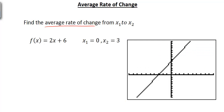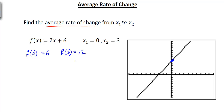What we're trying to calculate is the average rate of change from x1. If we evaluate f of 0, we plug 0 in: 2 times 0 plus 6 is 6. Then we look at f of 3—plugging 3 in gives us 2 times 3 is 6, plus 6 is 12. So we have the point (0, 6) and when x is 3, y is 12.